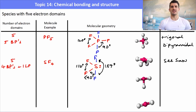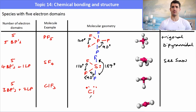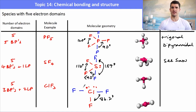With 5 electron domains, 3 bonding pairs and 2 lone pairs: an example is ClF3. Chlorine is the central atom with 3 fluorines attached and 2 lone pairs. The 2 lone pairs and 1 fluorine are in the same plane, while the other 2 fluorines are above and below in their own plane. The bond angles are 86.2 degrees between each of the fluorines, and 187 degrees between those 2 axial fluorines. This molecule is known as T-shaped.